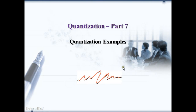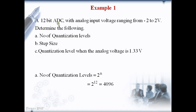Welcome to the Power DSP lessons. In this lesson we are going to see a couple of examples in quantization. In this first 12-bit ADC example, we need to find the number of quantization levels, step size, and quantization level for a particular analog voltage. The analog voltage given is 1.33 volts, and the input voltage ranges from minus 2 to plus 2. Since the voltage varies on both positive and negative sides, it is called bipolar quantization.